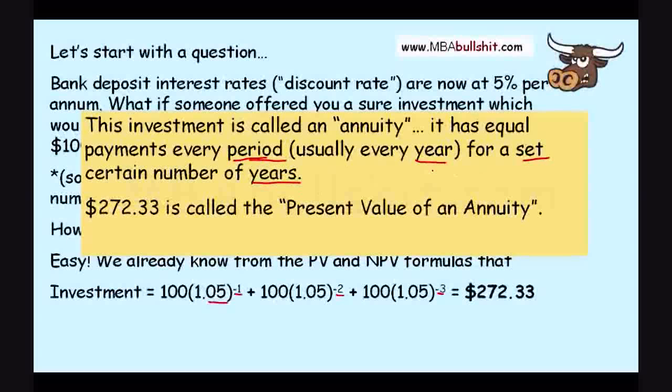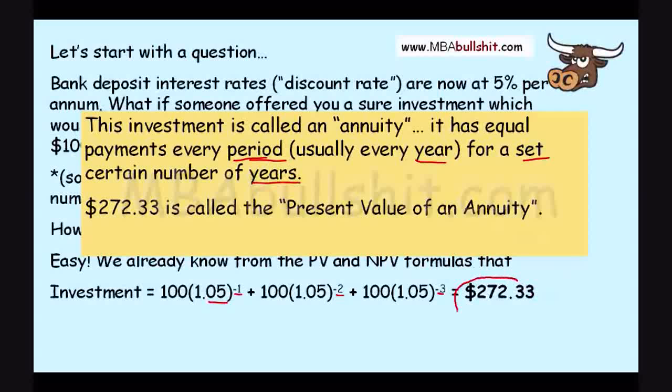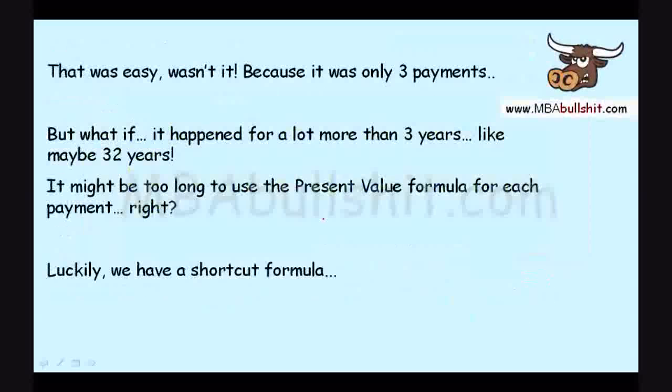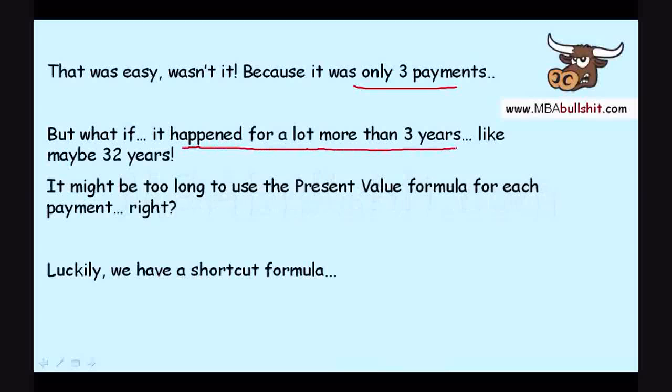Now, this $272.33 over here is called the present value of an annuity. So, it's simple. But it was simple because it was only three payments. What if it happened to be a lot more than three years, like maybe 32 years? It would be too long to use the present value formula for each payment.